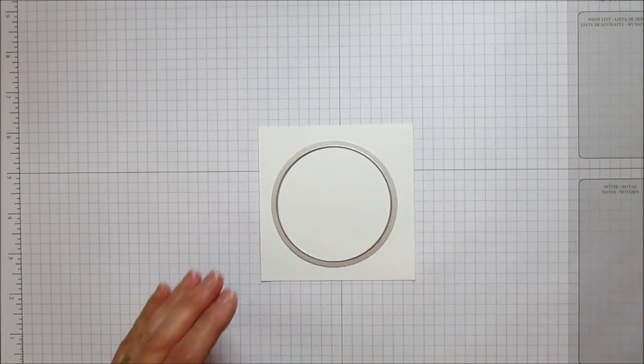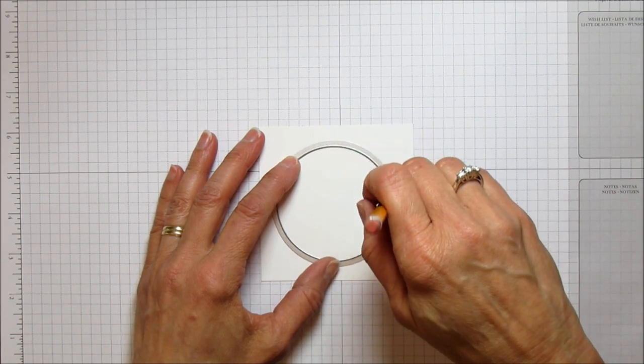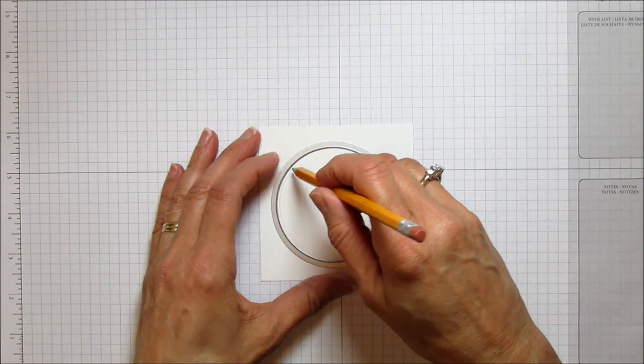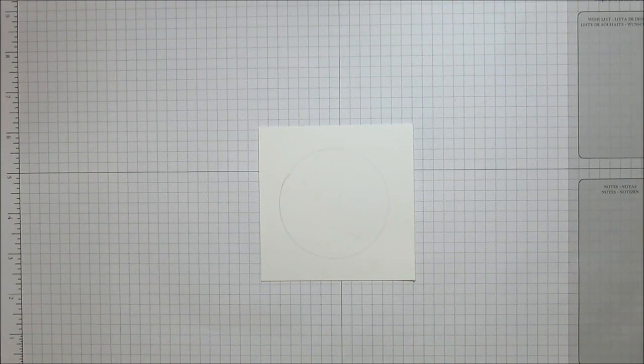I'm just going to center this in the center of my piece of cardstock, and I'm just going to draw on the inside of the circle a really light pencil mark. That's just going to give me a guide where to stamp my little flower.